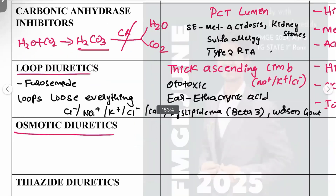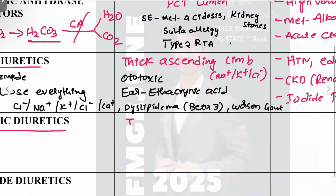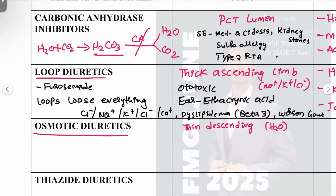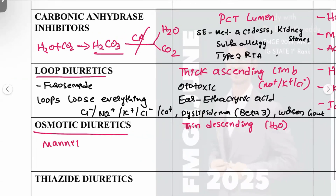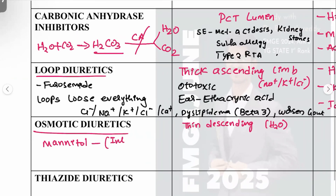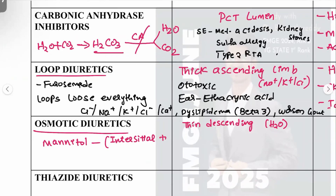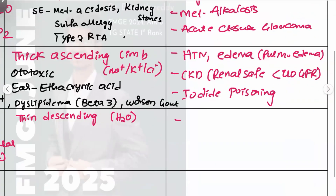Osmotic diuretics act at the thin descending limb and are mostly permeable to water only. Mannitol is the key example. Mannitol works by drawing fluid from the interstitial space into the intravascular space — this is how osmotic diuretics function.